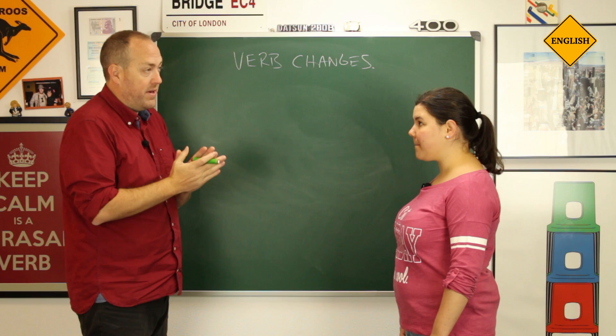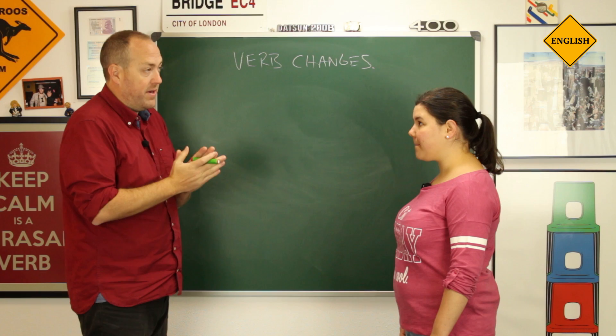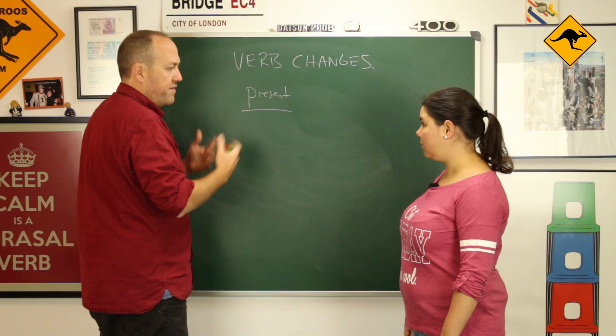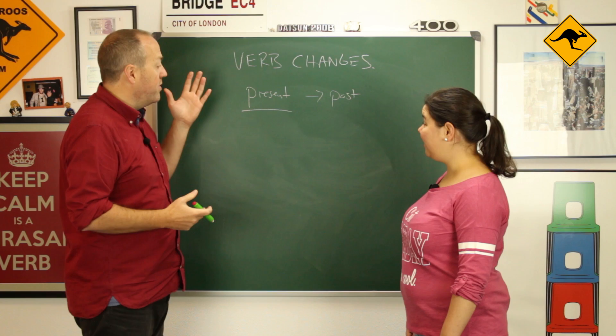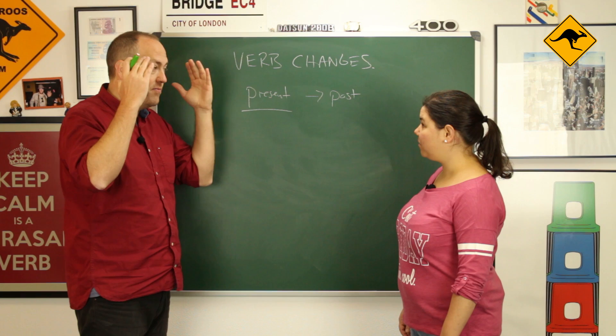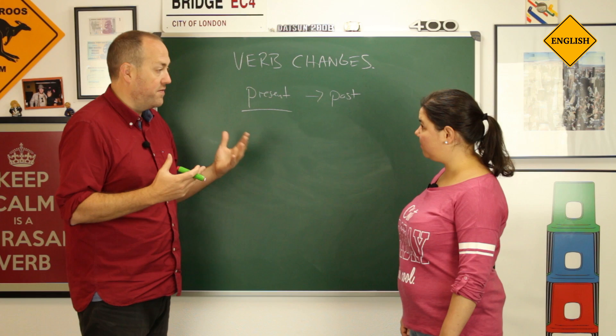Maybe in your English textbook, or maybe your English teacher has told you that the rule for verb changes in reported speech is: present, future, or whatever — we always change it to the past. But the truth is it's not that simple. It's not complicated, but we cannot say we always put the verb in the past. We have to use our brain to decide what is the best way to change the verb.